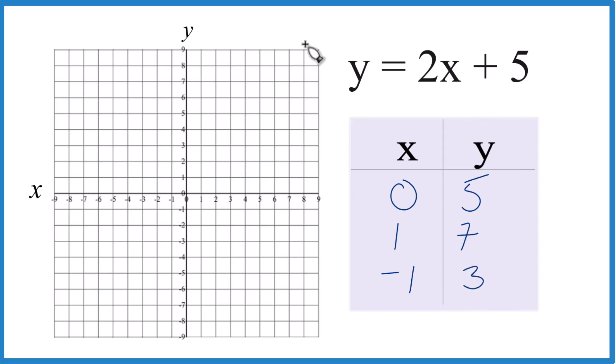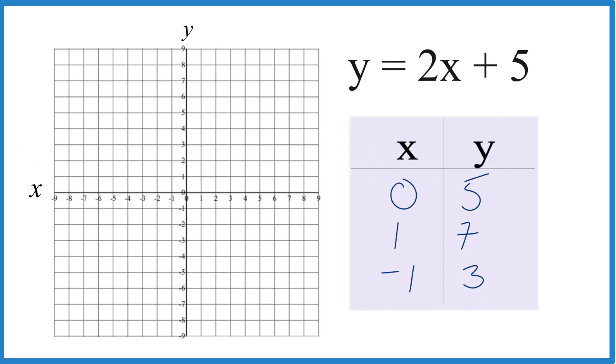So we have our points. Let's graph them. x is 0 and y is 5. Here's x is 0, and we go up 1, 2, 3, 4, 5. That's our first point. We have x is 1 and y is 7. You can graph with just two points; I like to use 3 because if I made a mistake, I'll catch it. x is negative 1 and y is 3. And there they are.